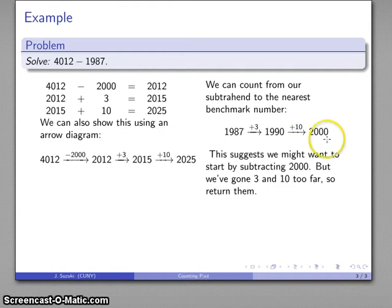Again, I can show this using an arrow diagram. Here's my 4012, take away too much, and get back the 3 and the 10 that we took as our excess.